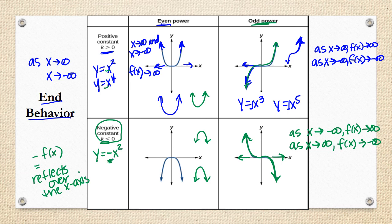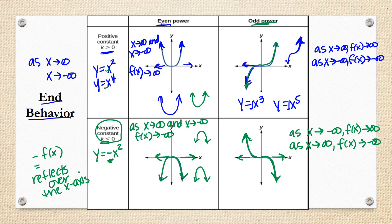For even powered functions with a negative coefficient, as x approaches both positive and negative infinity, your function values are approaching negative infinity — since as x gets smaller or larger, your function is going down. So that's what end behavior is. This is going to be really helpful when we're looking at polynomials and figuring out their end behavior, so this is something you'll definitely want to go back to.